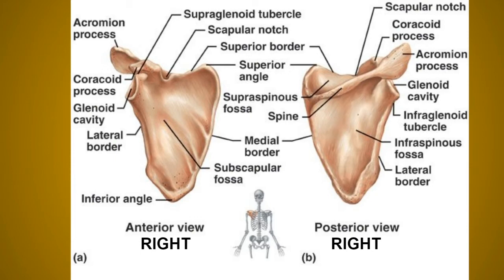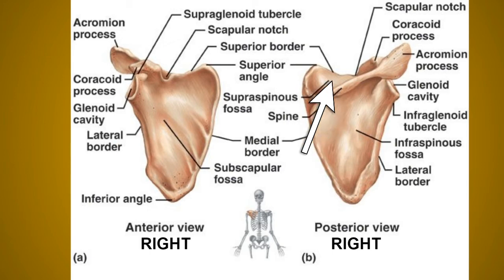The scapula has three processes: the spinous process (spine), the acromion process, and the coracoid process. The spine is triangular in structure — a triangular plate of bone with three borders and two surfaces. It divides the dorsal surface into the supraspinous and infraspinous fossae. The posterior border of the spine is known as the crest of the spine, which has an upper and a lower lip.